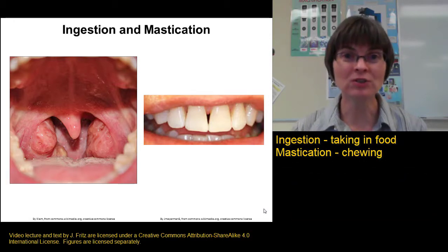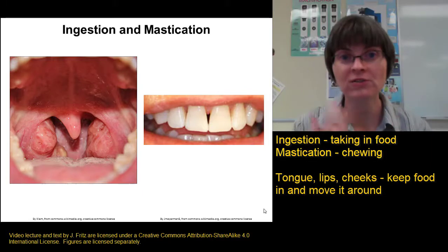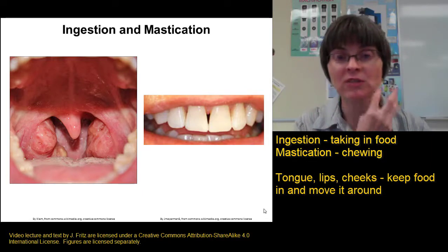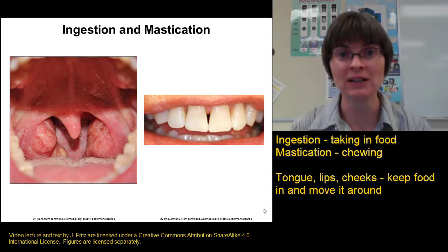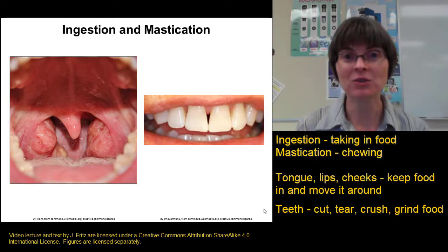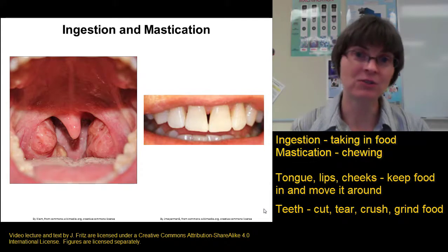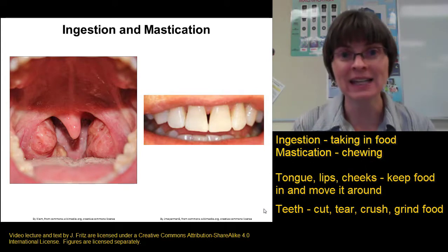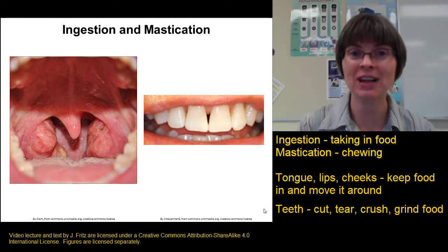Other important structures for mastication include the tongue, lips, and cheeks, which hold the food in the mouth and move it relative to the teeth so we can chew it appropriately. The teeth themselves are very important — we have teeth for biting, tearing, crushing, and grinding, reflecting the different types of food in our diet.